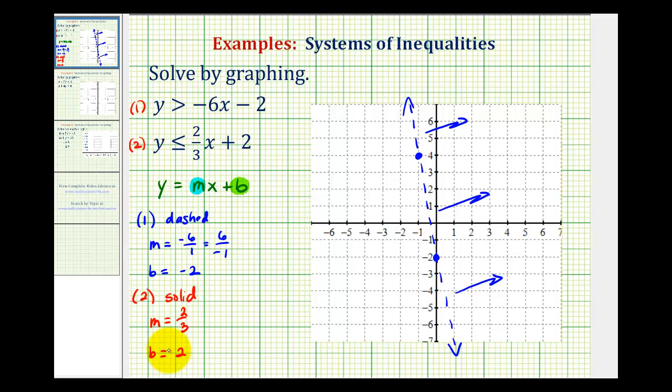So we'll plot positive two on the y-axis here. And then from here, we're going to go up two and right three. Up two, right three would be here. And again, now we're going to make a solid line passing through these two points.